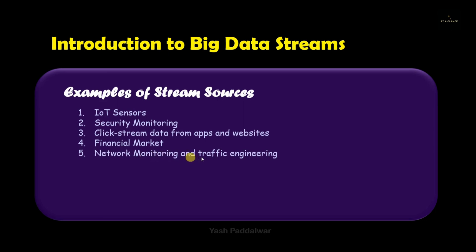The next source of big data streams is network monitoring and traffic engineering. Different IP packets are transferred from source to destination continuously. These IP packets and server requests can be considered a source of streaming data because this data can be analyzed for classifying suspicious activity over a network, and can also be used to classify an authenticated user or node over that network. The data about transferring information over a network therefore also generates a streaming source.